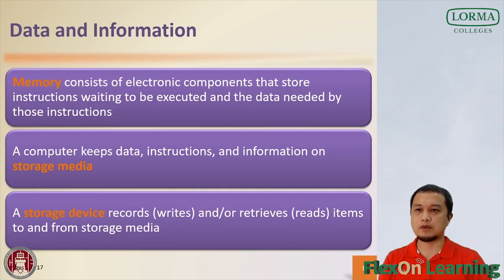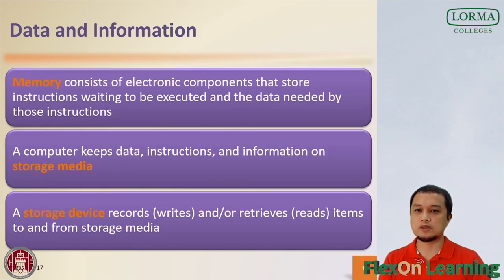Although some forms of memory are permanent, most memory keeps data and instructions temporarily, which means the contents are erased when the computer is off. Storage, by contrast, holds data, instructions and information for future use. For example, a computer can store hundreds of millions of student names and addresses permanently. A computer keeps data, instructions and information on storage media. Examples of local storage media include hard disk, solid state drive, USB flash drive, memory card and optical disk. The amount of storage for each type varies, but hard disk, solid state drive and optical disk usually hold more than USB flash drive and memory card.